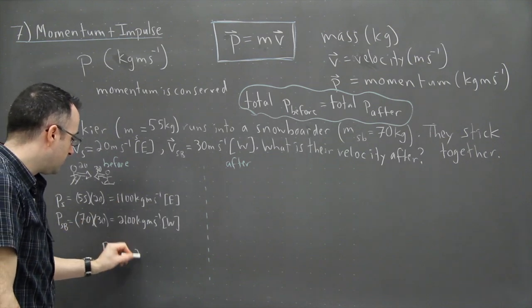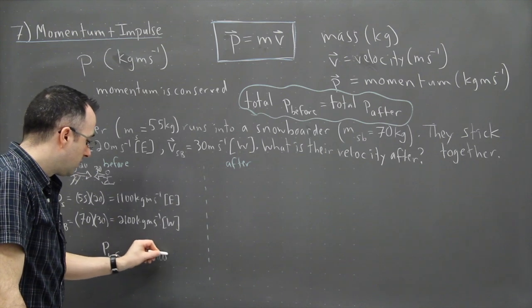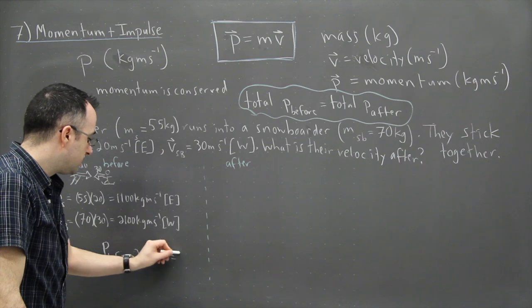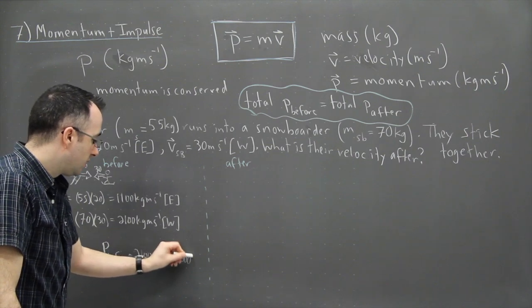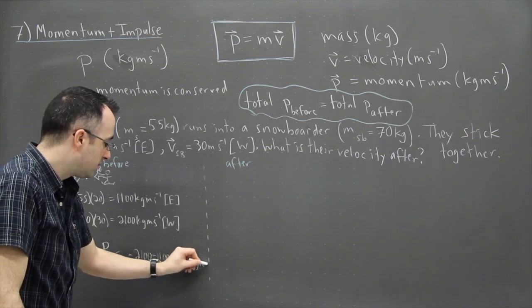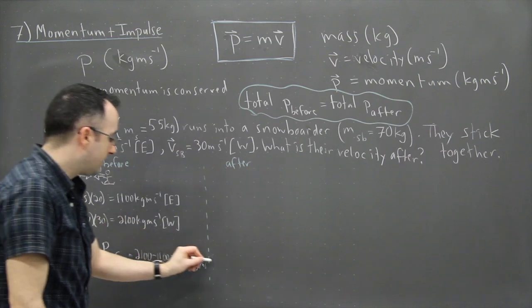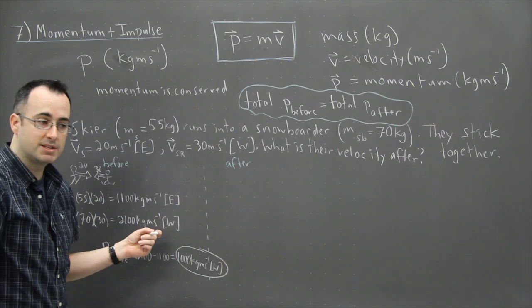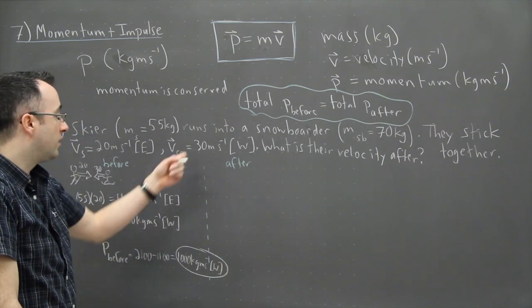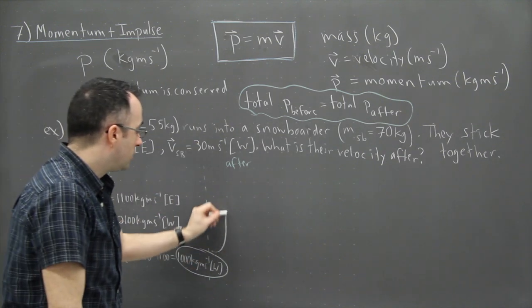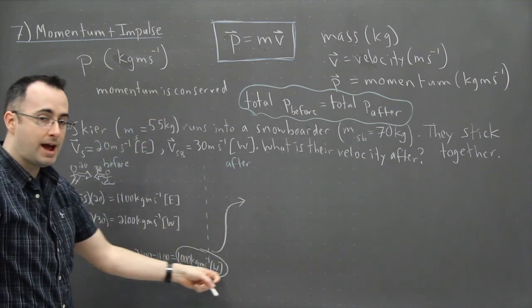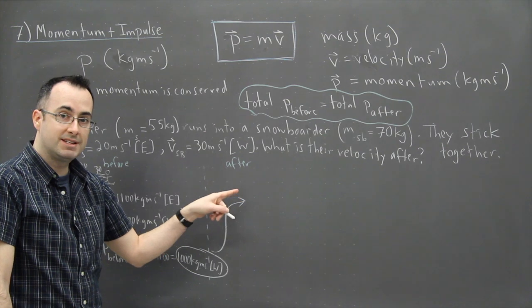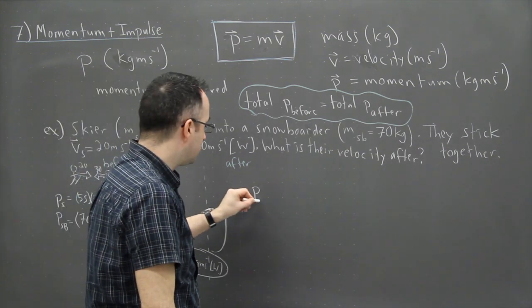So that's just going to be, oops, minus 1100 is going to just equal 1000 kilogram meters per second. And it's going to be west because that's the one that wins, so to speak, right? The snowboarder is more massive and going faster, so that one's going to win. The good news is now we can bring that, that total momentum before, is going to be the same thing as the total momentum after.